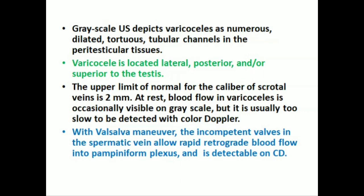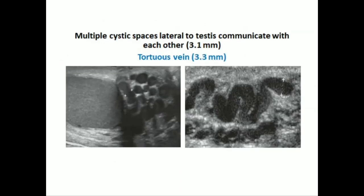Blood flow in varicocele is occasionally visible on grayscale, but it is usually too slow to be detected with color Doppler. With the Valsalva maneuver, the incompetent valves in the spermatic vein allow rapid retrograde blood flow into the pampiniform plexus, which is detectable on color Doppler. These images show multiple cystic spaces lateral to the testis communicating with each other; the diameter is 3.1 and 3.3 millimeters.